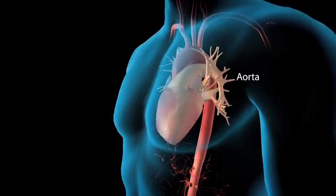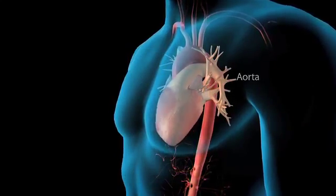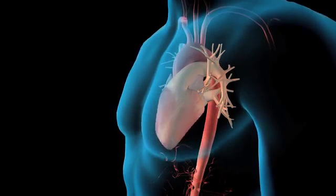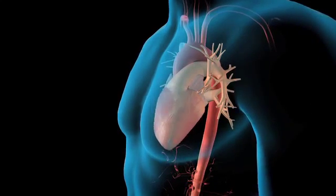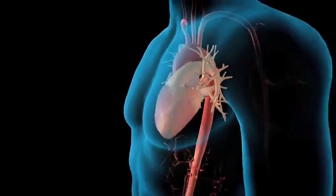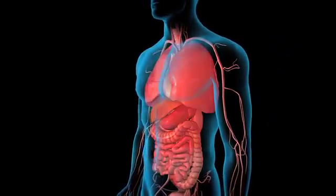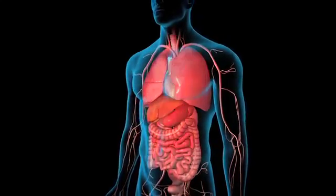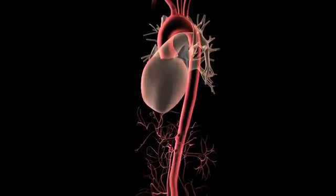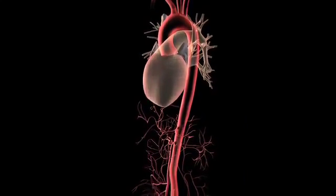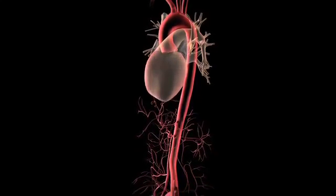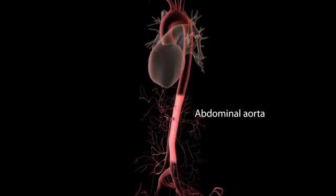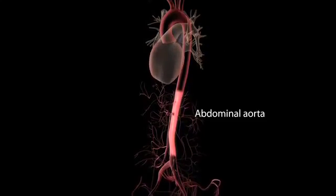The aorta is the largest artery in your body. Your heart pumps fresh oxygenated blood through your aorta to deliver oxygen and nutrients to all your organs and tissues. Your aorta is divided into two main sections: the thoracic aorta and the abdominal aorta.